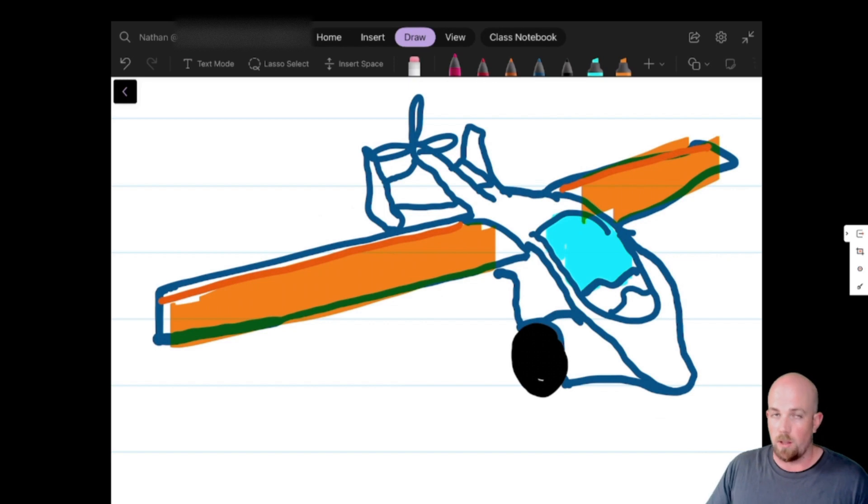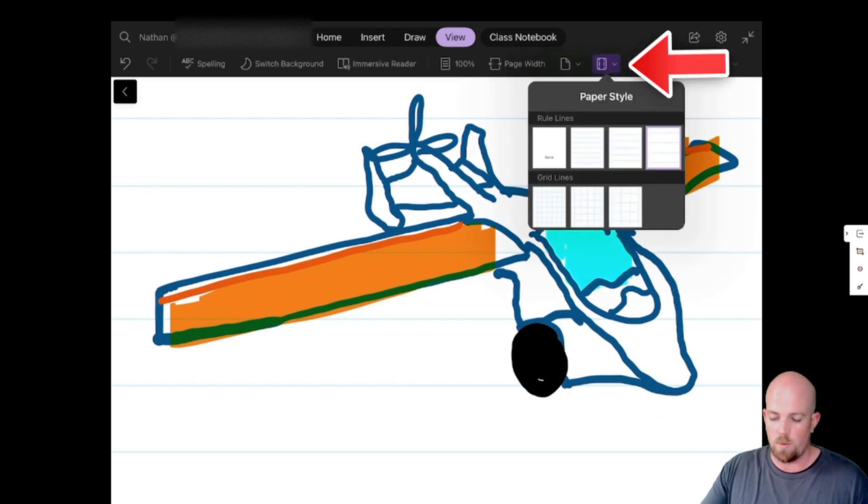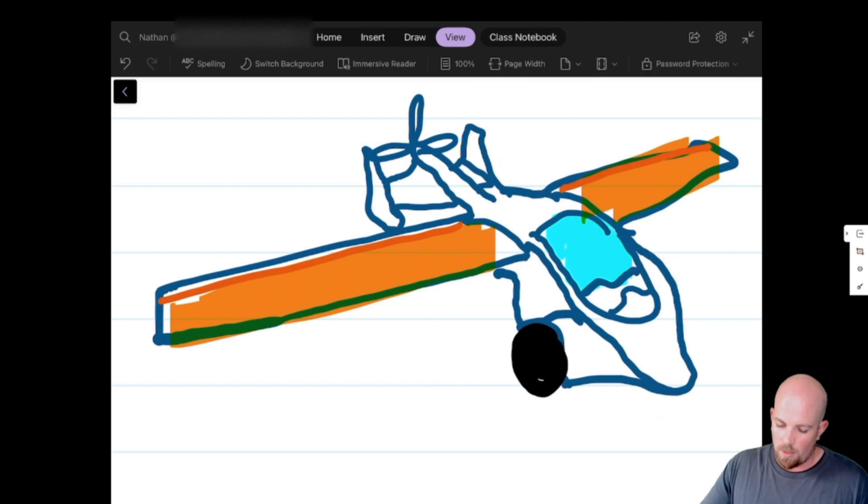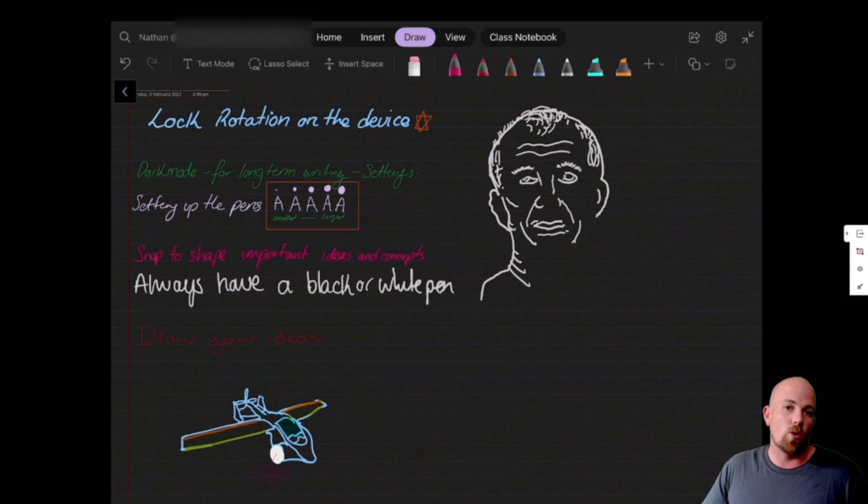And so because we have the lines turned on, which is probably another really important tip, is under view that we come over here and choose that we have the lines on. That they can come in and start to label what they have done. So those are some of my top ideas for getting started with using the OneNote iPad app for digital inking.